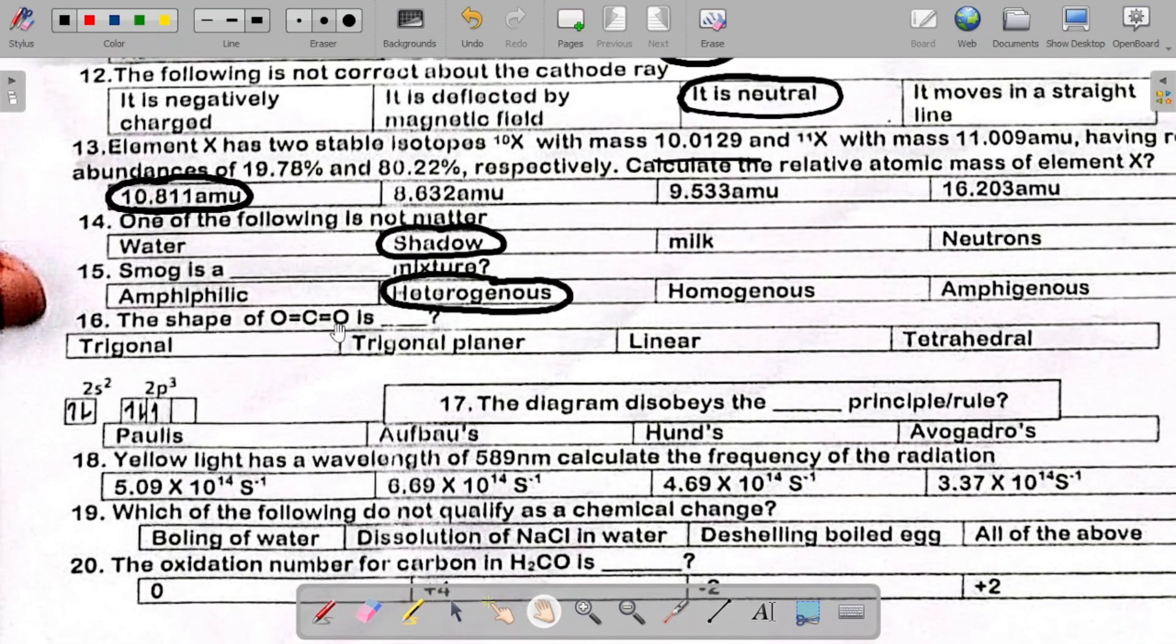Number 16 says the shape of carbon dioxide is dash. The answer there is linear. Carbon dioxide is linear.